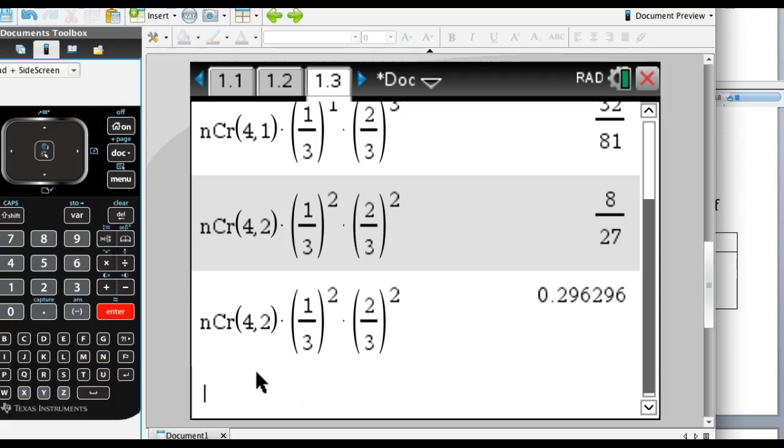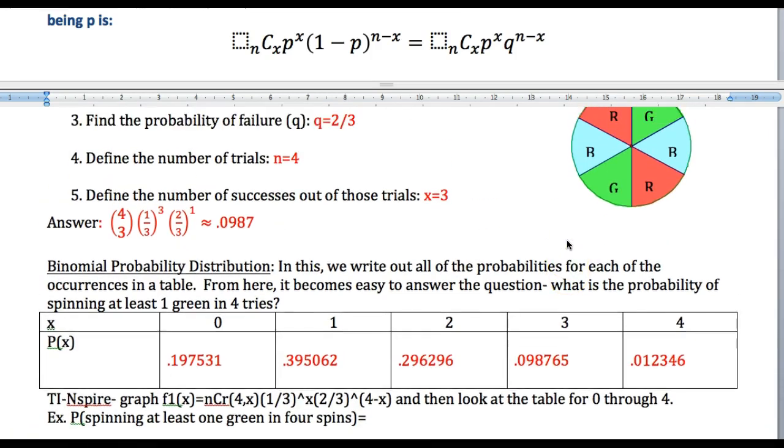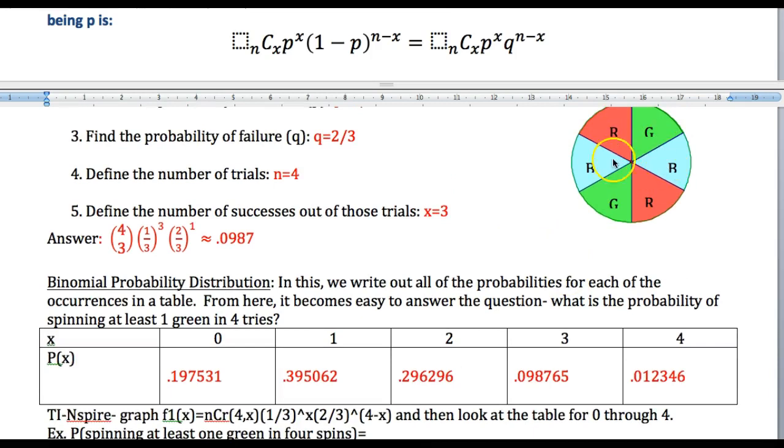So I'm going to show you how to do that in just a minute. But let's go talk about what the distribution means first. So over the course of these different times, where do we have the most occurrences? Well, if we wanted to spin green most often, how many times out of four would we get?